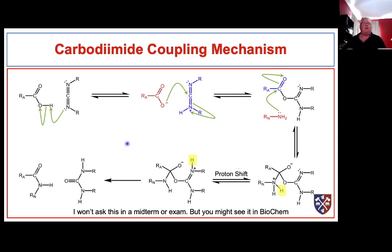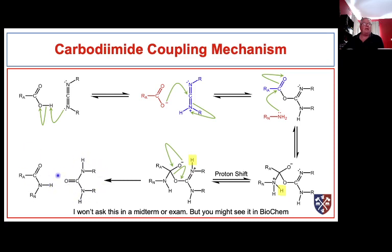Don't worry too much about this mechanism — you can work it out. The first thing that happens is DCC is quite basic; it pulls off a proton and becomes protonated. When it does, that carbon becomes very electrophilic and gets attacked by the carboxylate that just formed, giving our isourea intermediate. Then our amine comes along and attacks the carbonyl carbon, forming a tetrahedral intermediate. A proton moves to the nitrogen, and the carbodiimide leaves in its hydrated form, giving us our amide. I won't ask this on a midterm exam — I just give you this because you might see it in biochemistry.